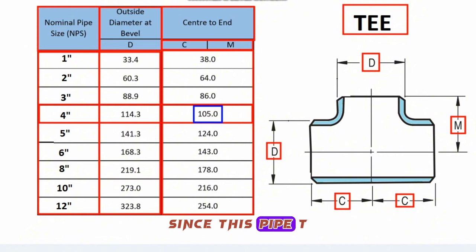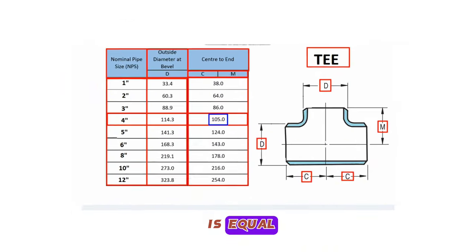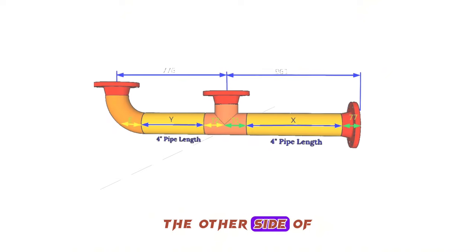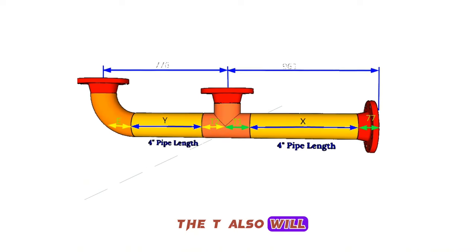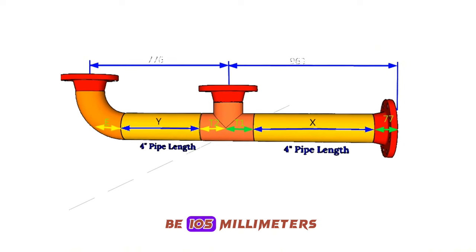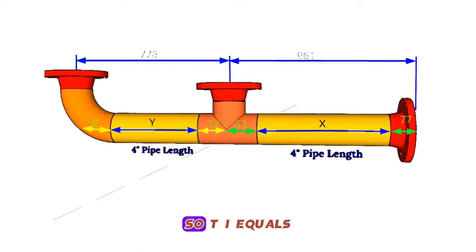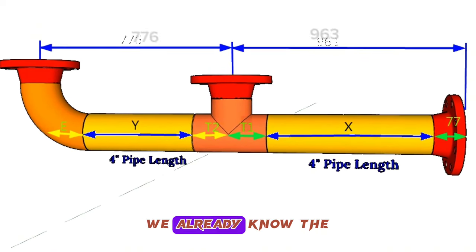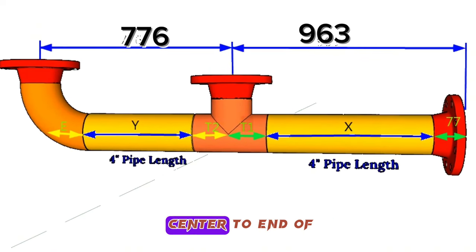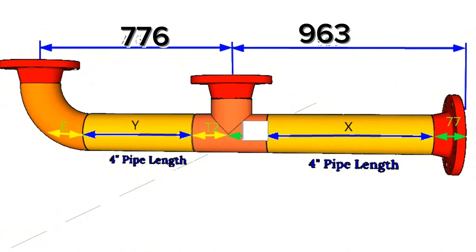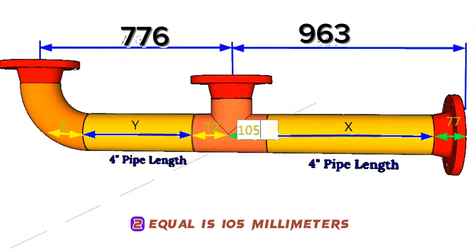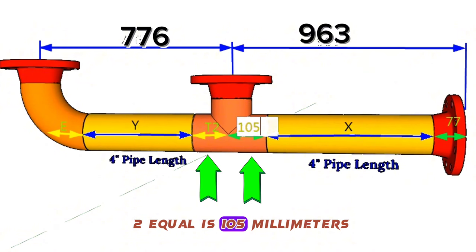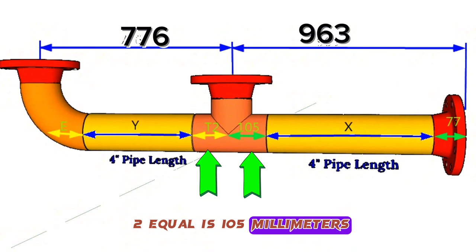Since this pipe tee is equal, the other side of the tee is also 105 millimeters — so T1 equals T2. We already know the center to end of the equal pipe tee: T1 equals T2 equals 105 millimeters.